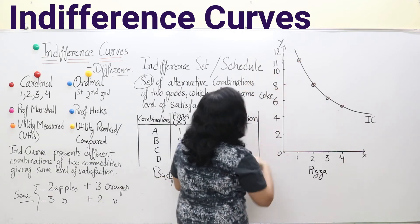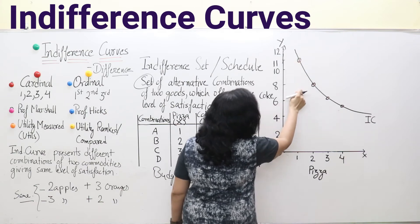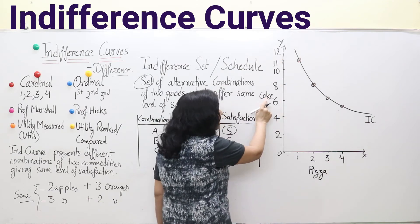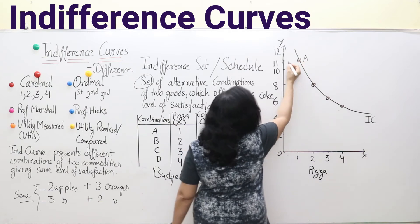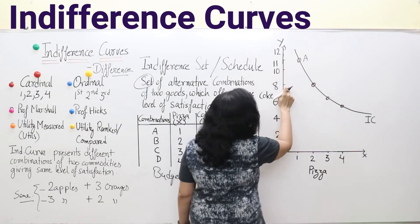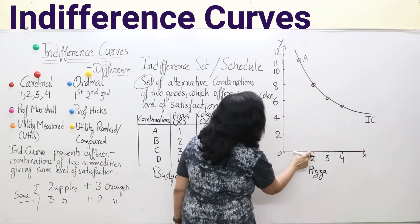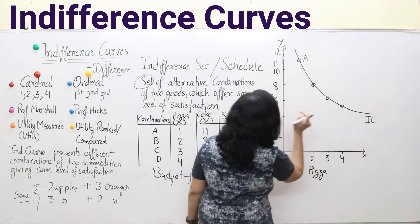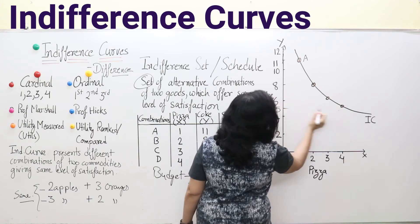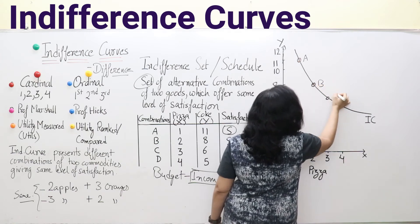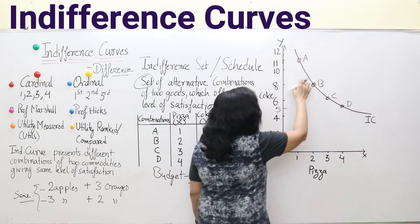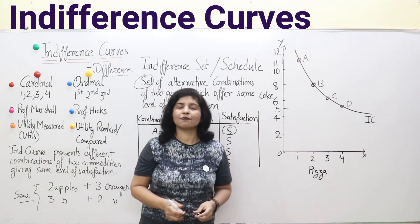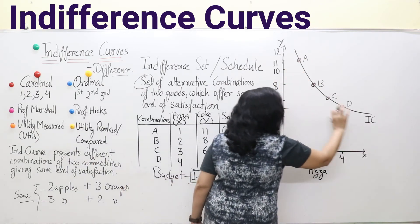When we represent this schedule in diagrammatic form, we get the indifference curve diagram. We plot the combinations: combination A is 1 pizza and 11 cokes, combination B is 2 pizzas and 8 cokes, combination C is 3 pizzas and 6 cokes, and combination D is 4 pizzas and 5 cokes. The curve joining all these combinations is known as the indifference curve, or IC. This curve is negatively sloped.